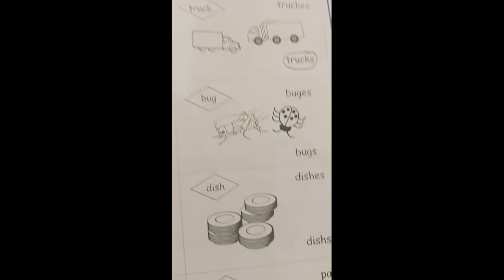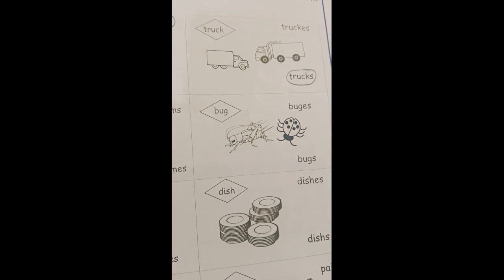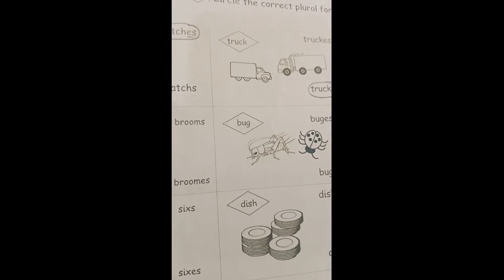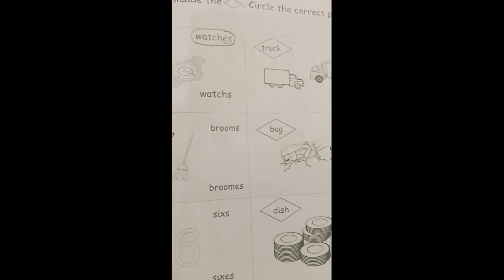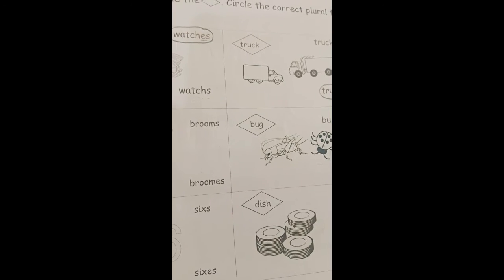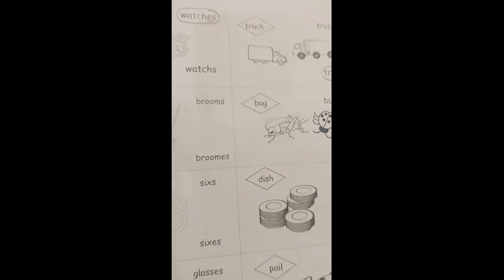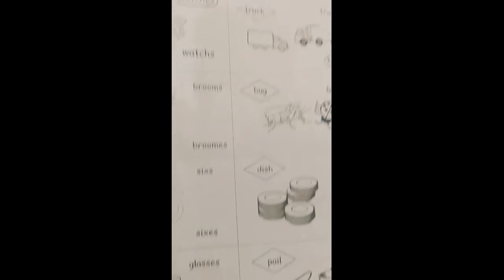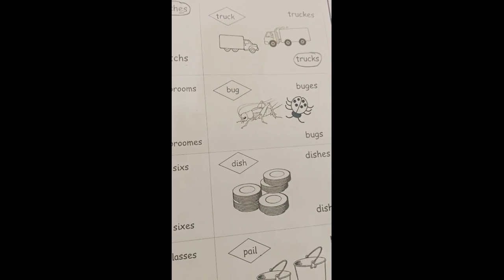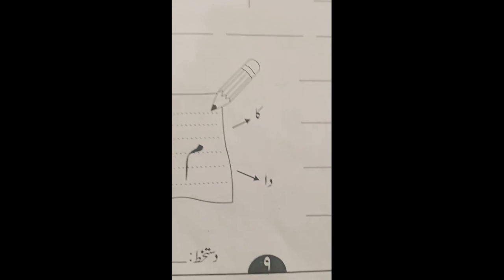Isi tarah se baaki bhi aap dekhenge pictures, aur jo sahi spelling hai. Aur aapko pata hona chahiye — jahan par S-H, C-H, O-S tarah ke words aate hain, wahan E-S right karna hai. Yeh page 79 hai, isko complete karna hai.